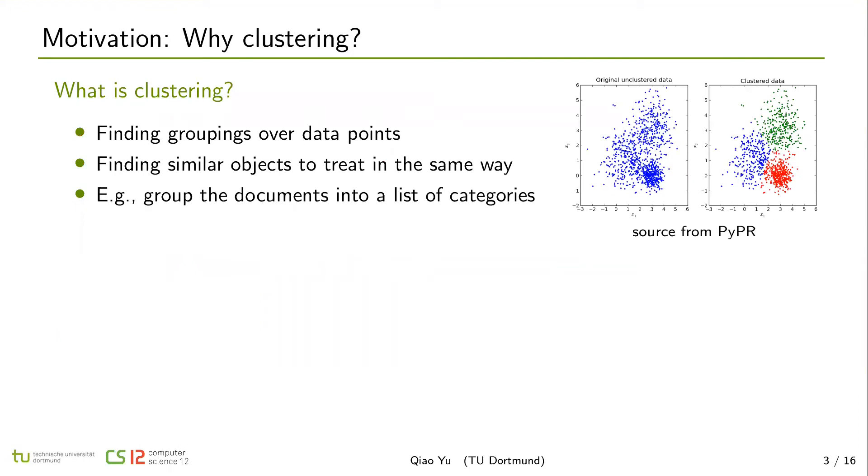So, why clustering? Clustering is one of the most popular machine learning techniques. Its purpose is to find groupings over data points. In theory, data points in the same group have similar properties. For example, we can use clustering to group documents into different categories.